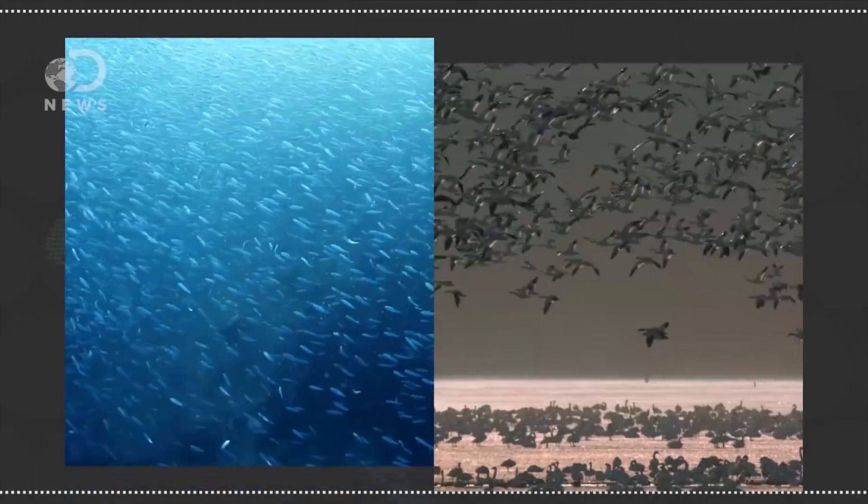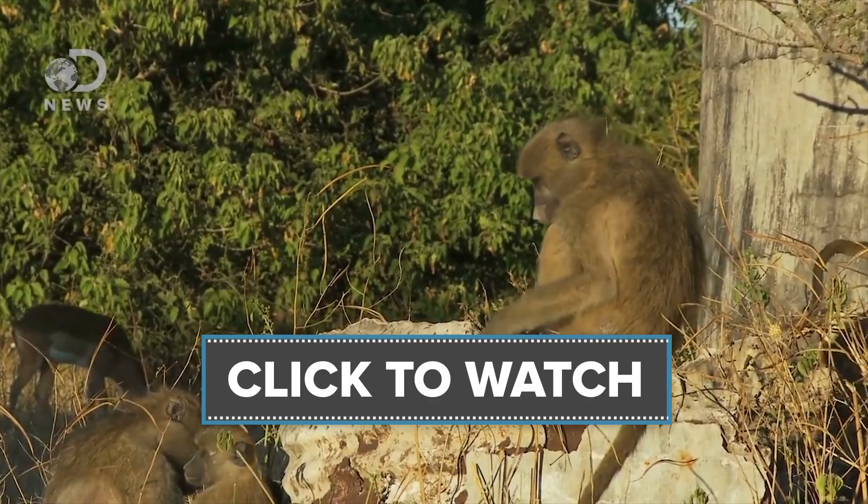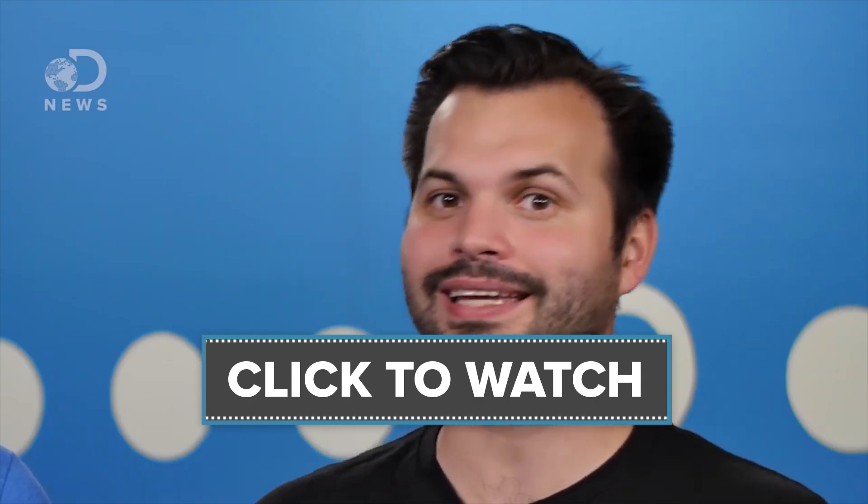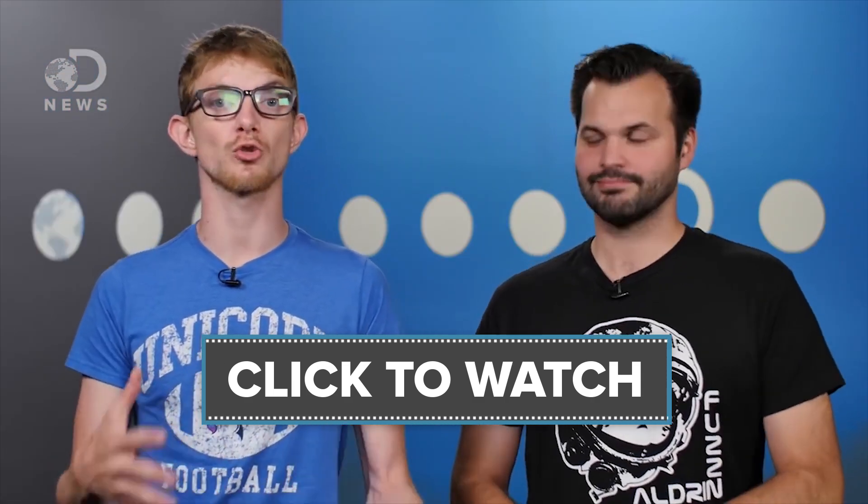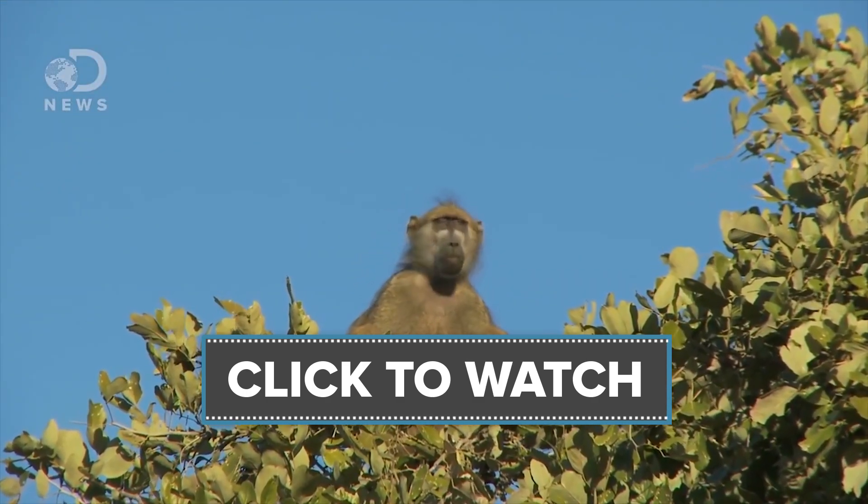We think we're pretty special with our precious democracy, but it isn't uniquely human. Julian and I explore other species that vote here. The researchers tracked the movements of a troop of olive baboons in Kenya, and found that every member of the troop had an equal say in where they all went. This was surprising, because olive baboons have a strong social hierarchy, and dominant members get choice picks of food or mates over their subordinates.